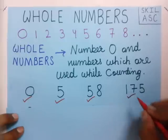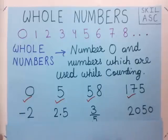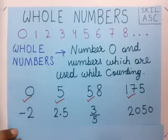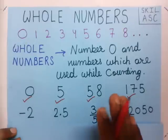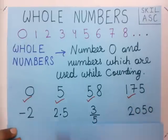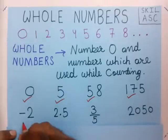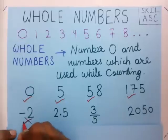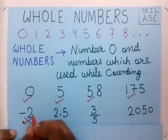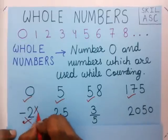Now we take another number which is a negative number. Negative numbers are not used while counting, and a negative number is not 0, so this is not a whole number — we cross it. This is not a whole number.